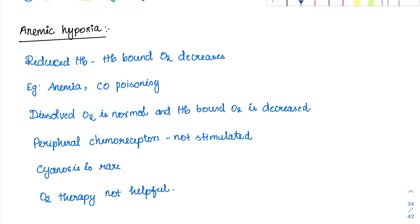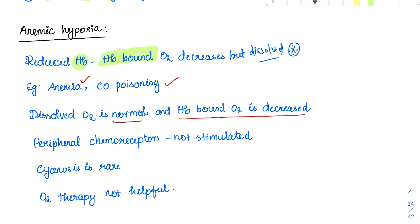Now, anemic hypoxia. Anemia means reduced hemoglobin. In anemic hypoxia, the hemoglobin-bound oxygen is decreased but the dissolved form is completely normal. Classical examples are anemia and CO (carbon monoxide) poisoning. Because dissolved oxygen is normal, the peripheral chemoreceptors are not stimulated at all — this is an important point for both anemia and CO poisoning.